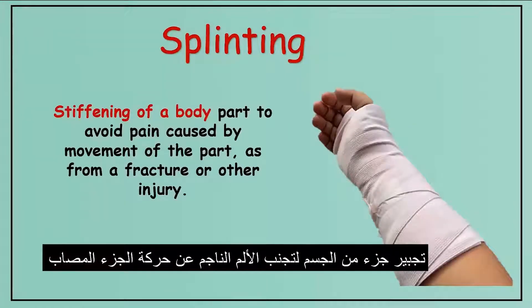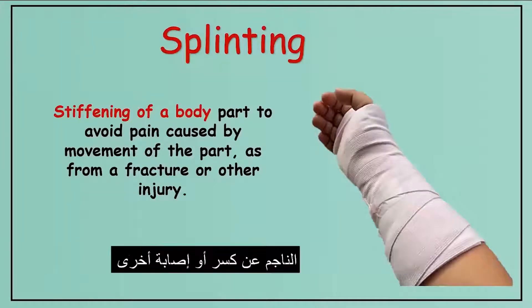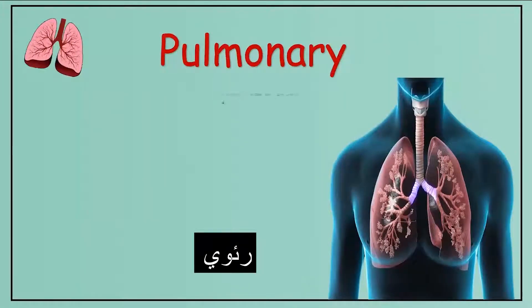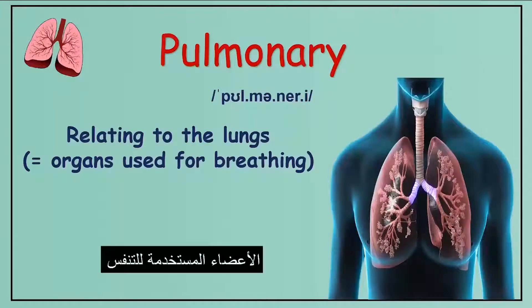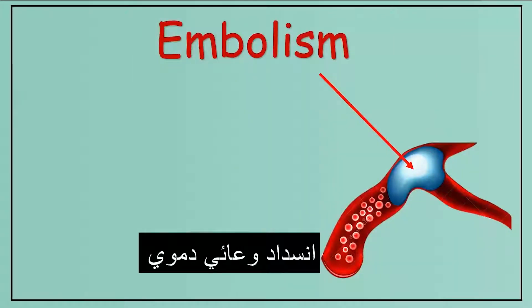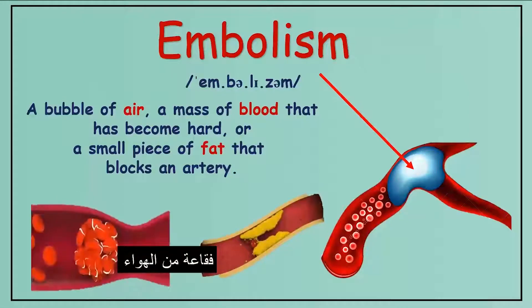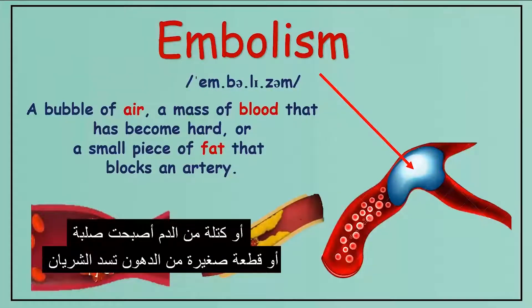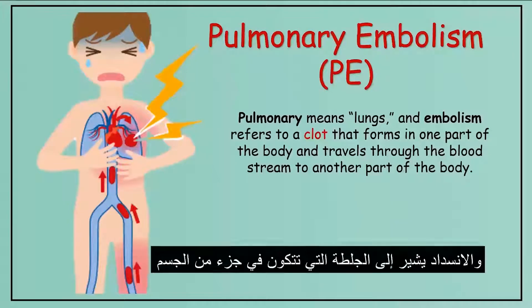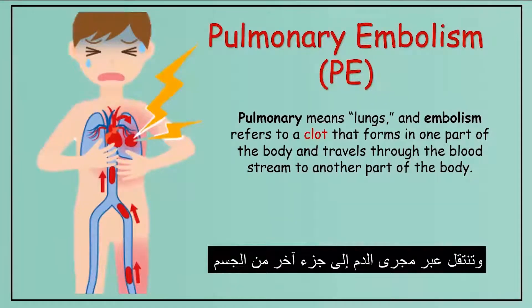Splinting: stiffening of a body part to avoid pain caused by movement, as from a fracture or other injury. Pulmonary: relating to the lungs — the organs used for breathing. Embolism: a bubble of air, a mass of blood that has become hard, or a small piece of fat that blocks an artery. Pulmonary embolism: 'pulmonary' means the lungs and 'embolism' refers to a clot that forms in one part of the body and travels through the bloodstream to another part.